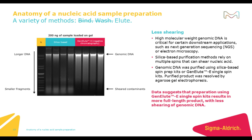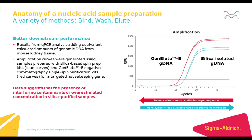Spinning the sample only once has other advantages as well. High molecular weight genomic DNA is critical for certain downstream applications such as next-generation sequencing or electron microscopy. Silica-based purification methods rely on multiple spins that can shear the nucleic acid. Shown here are four replicate samples purified either using a silica column or a GenLuE column — there is more full-length product on the electrophoresis gel for the GenLuE-purified nucleic acids. Additionally, these smaller fragments that could be due to shearing are often included in yield calculations and can give a false sense of how much template is being used in downstream workflows.